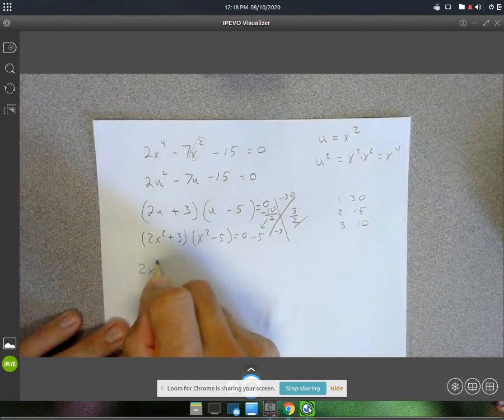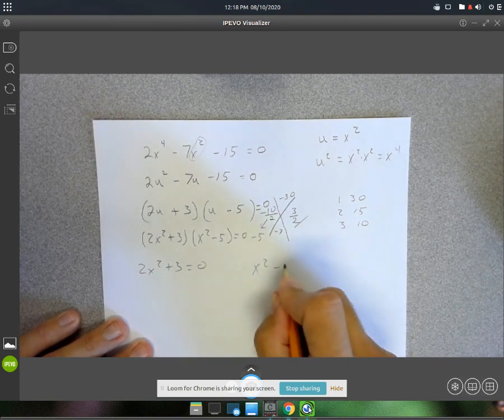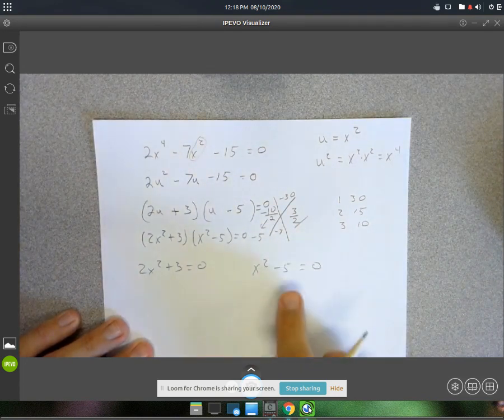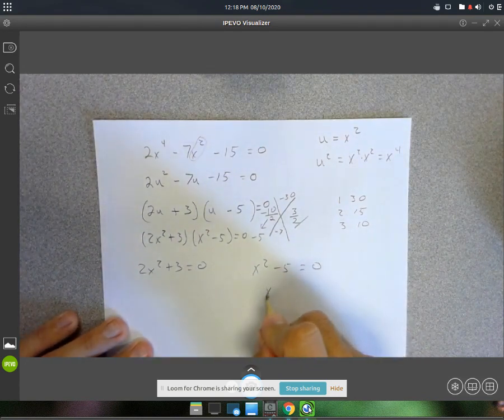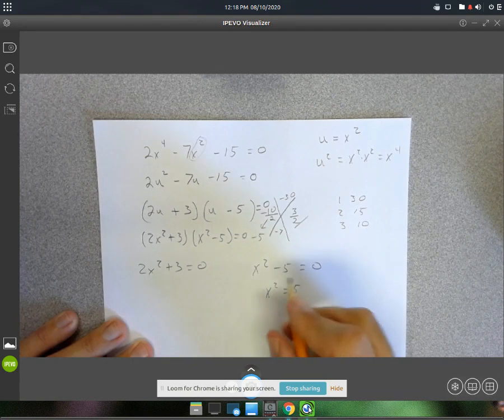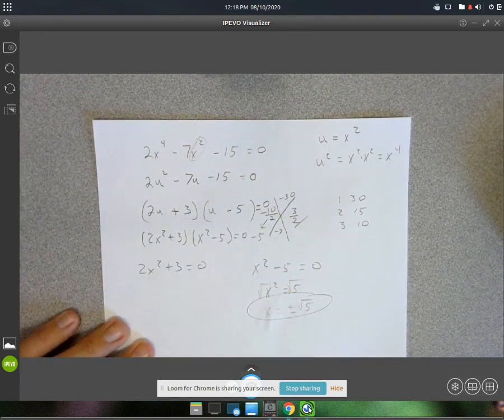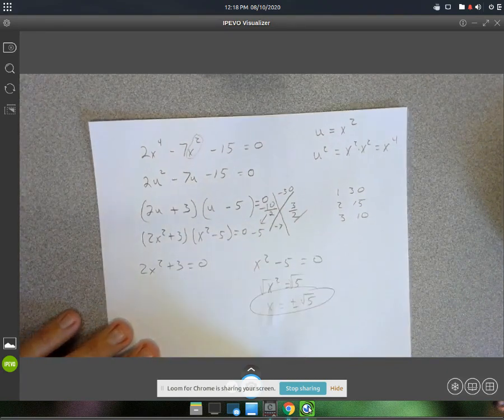So 2x squared plus 3 equals 0. x squared minus 5 equals 0. I'll solve this one first. It's easier. x squared equals 5. And then square root both sides. So we get x equals plus or minus root 5. That's two of our answers.